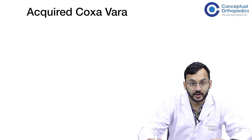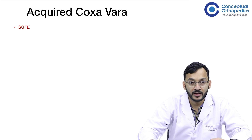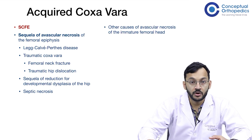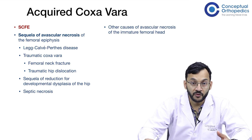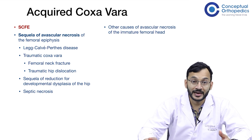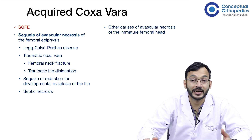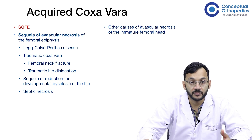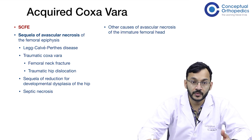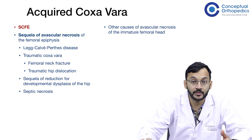The most common cause of acquired coxa vera is SCFE. Other causes include sequelae of avascular necrosis of the femoral epiphysis, which can result from Perthes disease, traumatic coxa vera causing a femoral neck fracture or traumatic hip dislocation, forcible reduction of DDH leading to AVN, or sequelae of septic necrosis of the femoral head or septic arthritis.